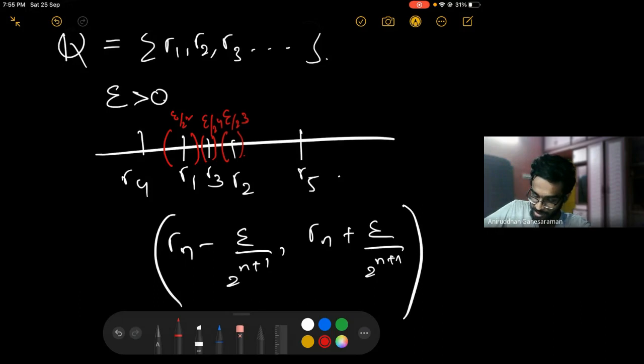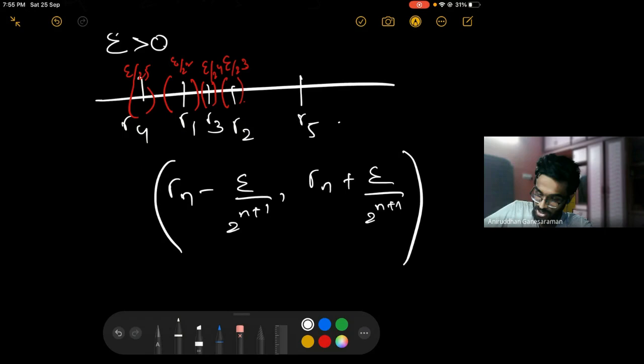It's not very difficult to see that Q is contained in this union, simply because rn is in this interval.